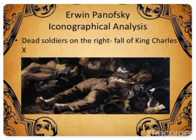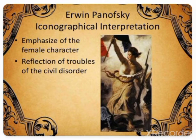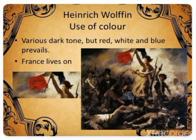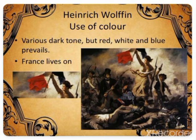The dead soldiers on the right indicate the fall of King Charles. Coming to the color tones, red, white, and blue prevail throughout the painting. This painting was later purchased by King Louis-Philippe to demonstrate his support of republican values, but he never exhibited it and it was returned to Delacroix in 1839 because the revolutionary ideologies behind the painting became perceived as dangerous and potentially inflammatory. It's actually a good reminder of how politicized art was in 19th century France.